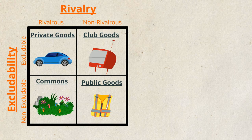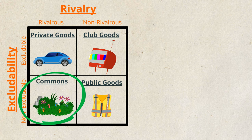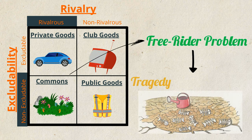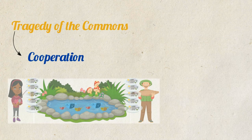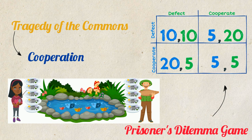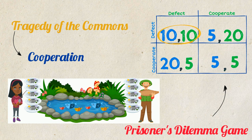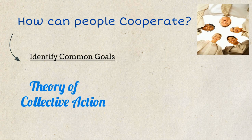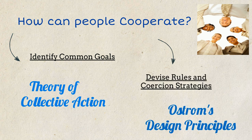So to conclude, we have learned that environmental resources are common pool resources — that is, they are non-excludable and rivalrous — which makes them prone to the free rider problem leading to the tragedy of the commons. In order to avoid the tragedy, the best we can do is to cooperate to use the resources in an equitable manner and share the cost of their maintenance. But the prisoner's dilemma game showed us that self-interested rational individuals may not necessarily choose to cooperate, even when it works in their best interest. Therefore, in order to cooperate, it is important for people to communicate to identify their common goals and devise rules and coercion strategies they can commit to.